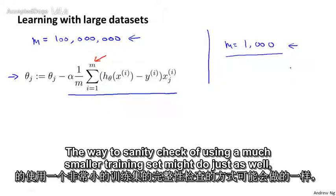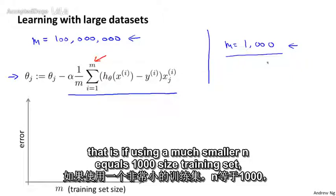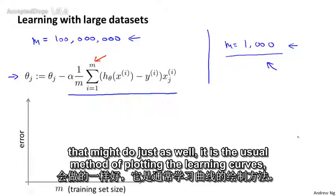The way to sanity check if using a much smaller training set might do just as well, that is if using a much smaller n equals one thousand size training set might do just as well, is the usual method of plotting the learning curves.